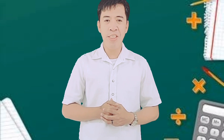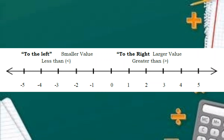Now, let's compare integers by using the number line. As we move to the right on the number line, the numbers get larger in value. If the integer we are comparing is bigger in value, we will use the symbol greater than. On the other hand, as we move to the left on the number line, the values get smaller. If the integer we are comparing is smaller in value, we will use the symbol less than.